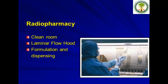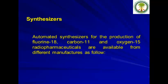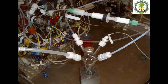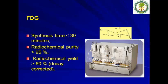When establishing a cyclotron facility, you need a radiopharmacy — essentially a clean room with associated equipment like laminar flow cabinets for formulation and dispensing of the final product. You also need a synthesizer for FDG, oxygen-15, or other radiotracers. The old semi-automated FDG synthesis took about 90 minutes, whereas new synthesizers can produce FDG in 25 minutes with high radiochemical purity and yield.